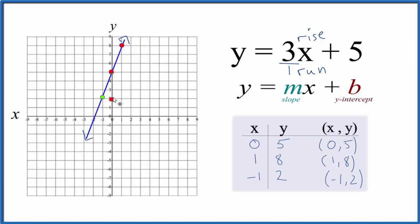Go down 1, 2, 3 and over 1 to the left. We could do that again. Down 1, 2, 3 over 1 to the left. All these points are on our line, so we did this correctly. This is the graph for y = 3x + 5.